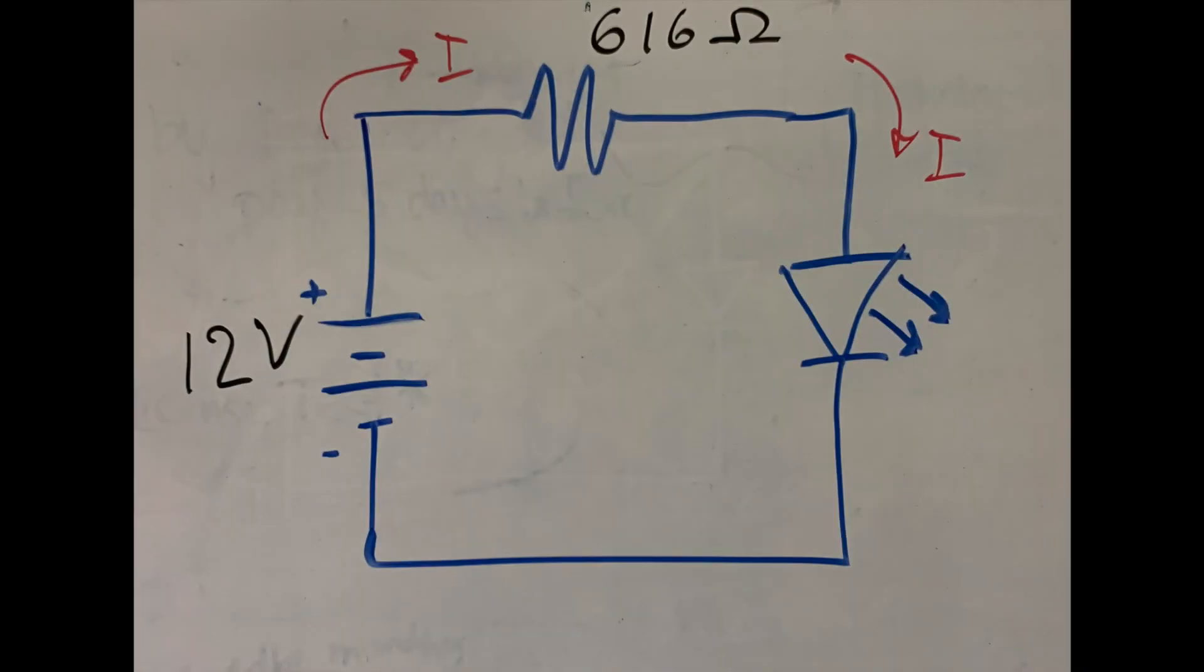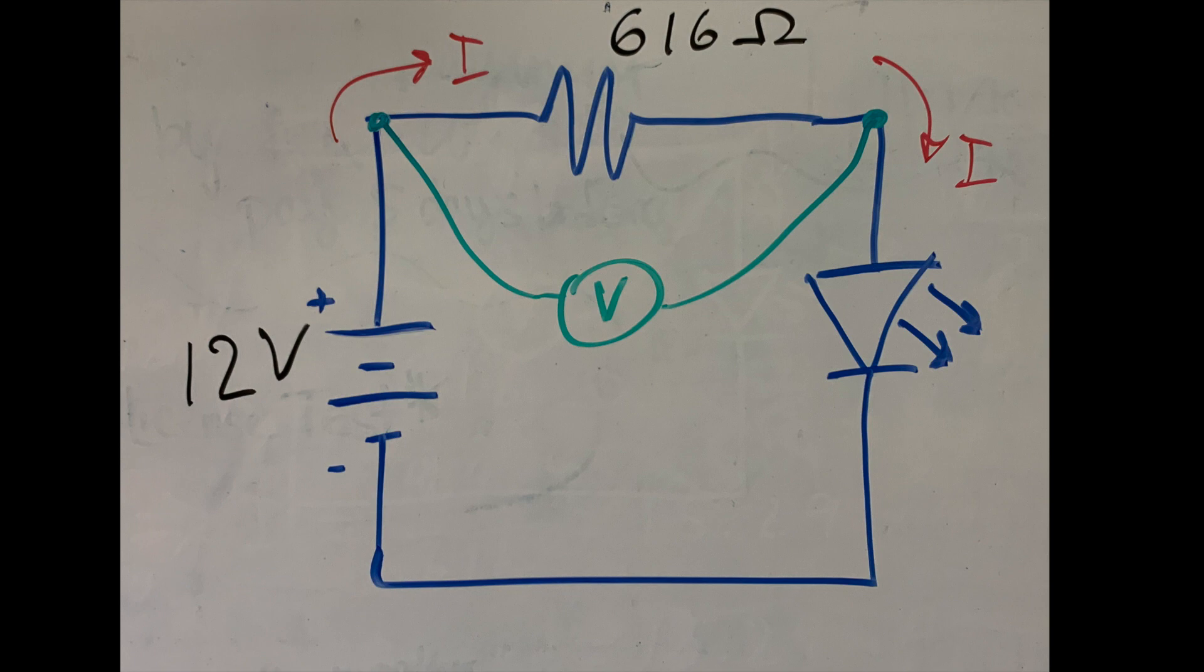So why does it work? If you look at the circuit, you can see that it's the same current that flows through all the components. So if we measure it in one part of the circuit, we'll know it in all the parts of the circuit. Since all we can measure is voltage, then we apply our voltmeter probes across the resistor that we know. Once we know the voltage and the resistance, it's really easy to calculate the current using Ohm's law.